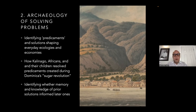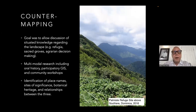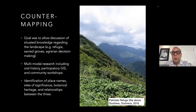Most importantly, we sought to identify whether the knowledge, memory, and prior solutions of the Kalinago, enslaved Africans, and their children informed later ones. To do this, I employed three different approaches. The first was to draw on the excellent long-term tradition of critical cartographies and counter-mapping—a way to allow discussion of situated knowledge regarding the landscape, including refugia, sacred groves, and agrarian decision-making in a very complicated landscape—to challenge notions that Dominica, considered an island of natural abundance, was actually a carefully crafted garden island requiring constant human manipulation.